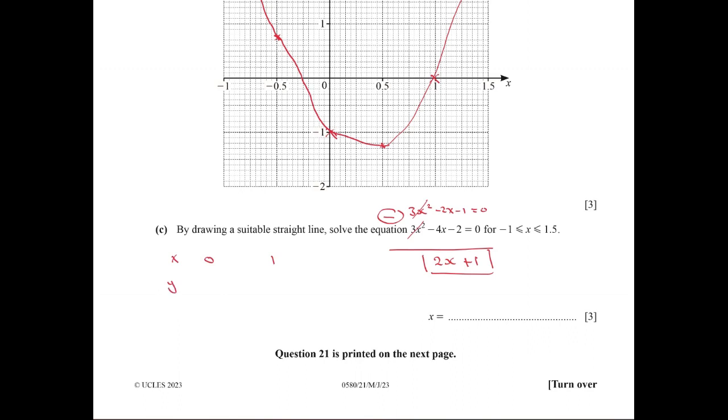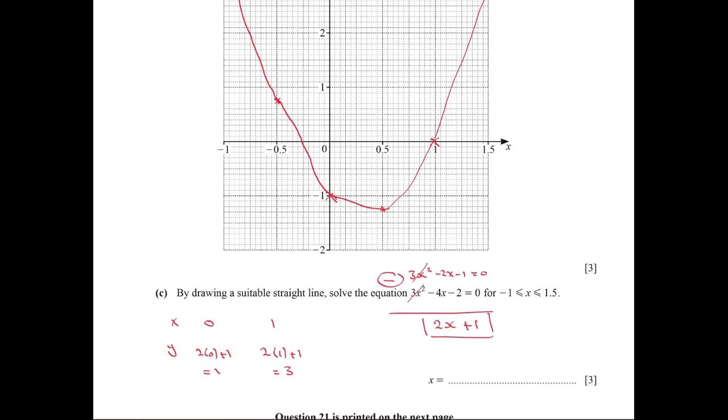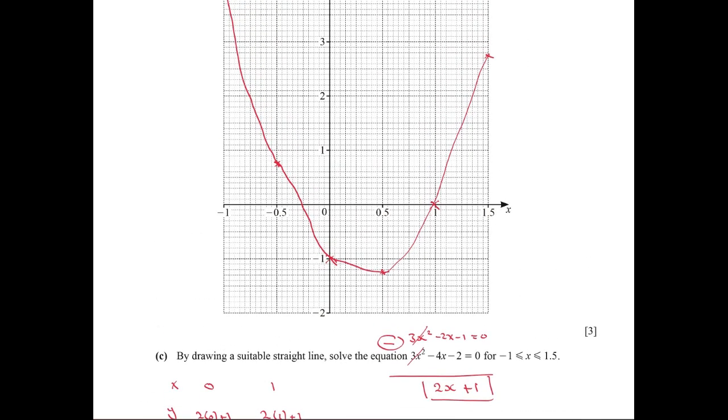By picking 0 and 1 for the values of x, you will get the value of y, which is 2 times 0 plus 1 equals 1, and 2 times 1 plus 1 equals 3. So the new line coordinates are (0,1) and (1,3).